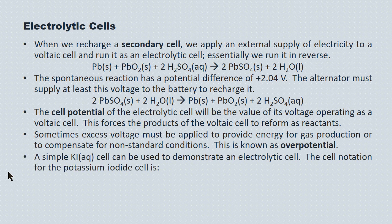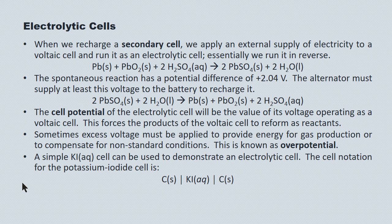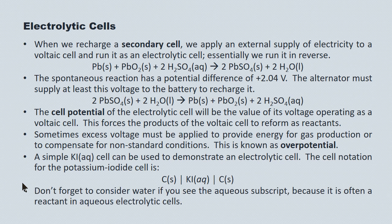The potassium iodide cell is often used to demonstrate an electrolytic cell. The cell notation for it shows two inert carbon electrodes with potassium iodide in aqueous solution in the middle. You'll notice there are no two half cells — in voltaic cells we want to separate reduction from oxidation to run electrons through an external circuit, but here we're not doing that. As often as not, we don't have two separate half cells, but in point of fact they're part of a single cell.